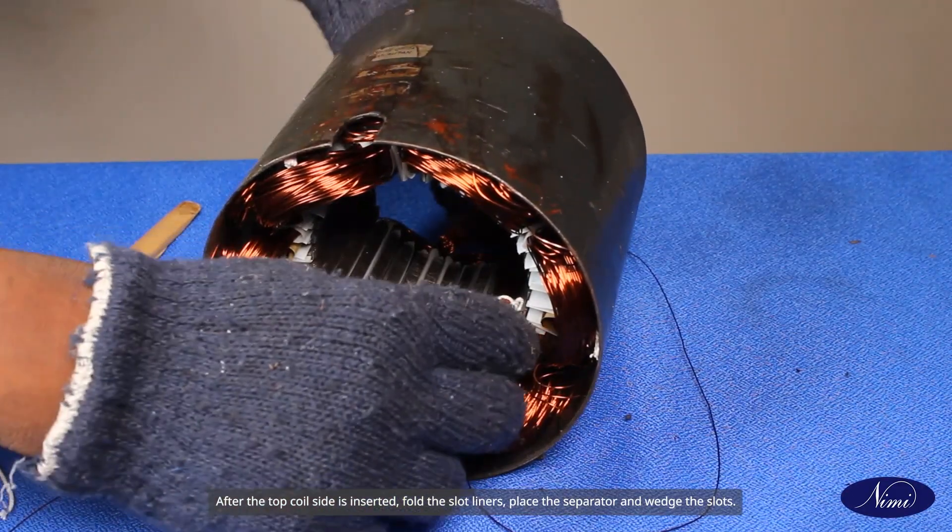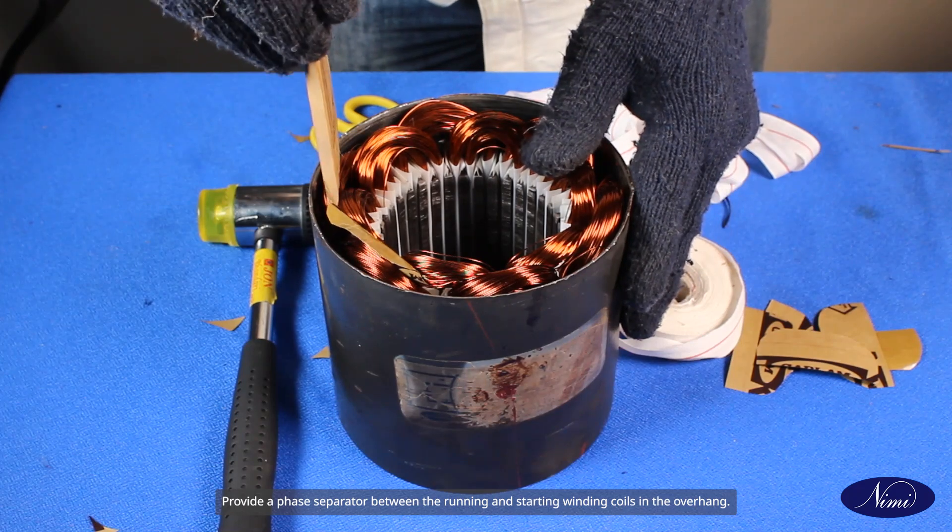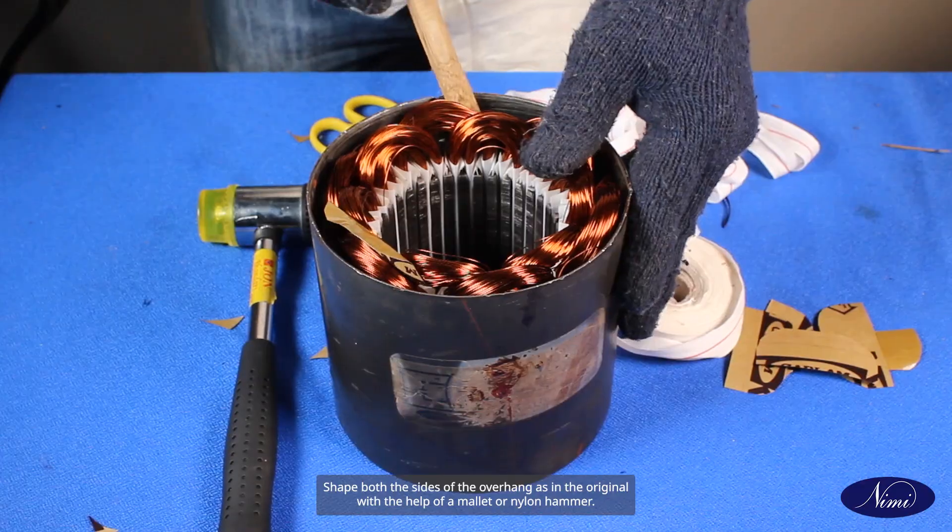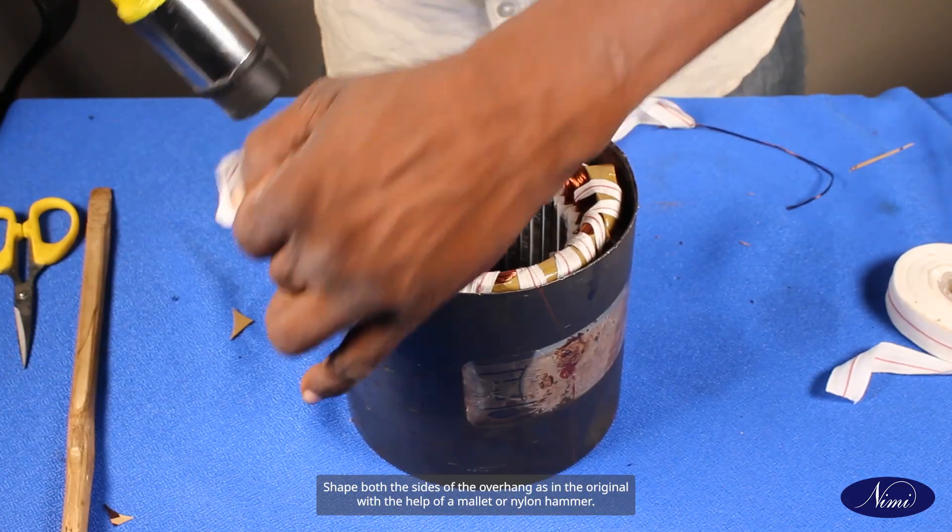Place the separator and wedge the slots. Provide a face separator between the running and starting winding coils in the overhang. Shape both of the sides of the overhang as in the original with the help of a mallet or nylon hammer. Apply uniform mild blows, avoid damage to the wires or insulation.